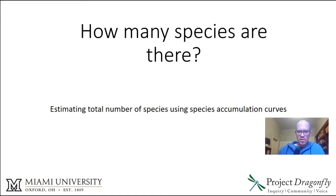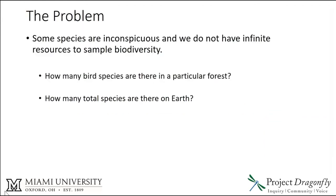We're going to look at how many species there are on Earth, using species accumulation curves to estimate the total number of species in an area or on the entire planet. The problem is that some species are inconspicuous and we do not have infinite resources to sample biodiversity. If you want to know how many birds there are in a forest patch and you went out and saw seven bird species on one day, would you be able to say that there's definitively just seven species? There's probably some that you missed. The same applies to the total number of species on Earth — even though we've been studying this for a while, there are clearly more species to be found, but how many?